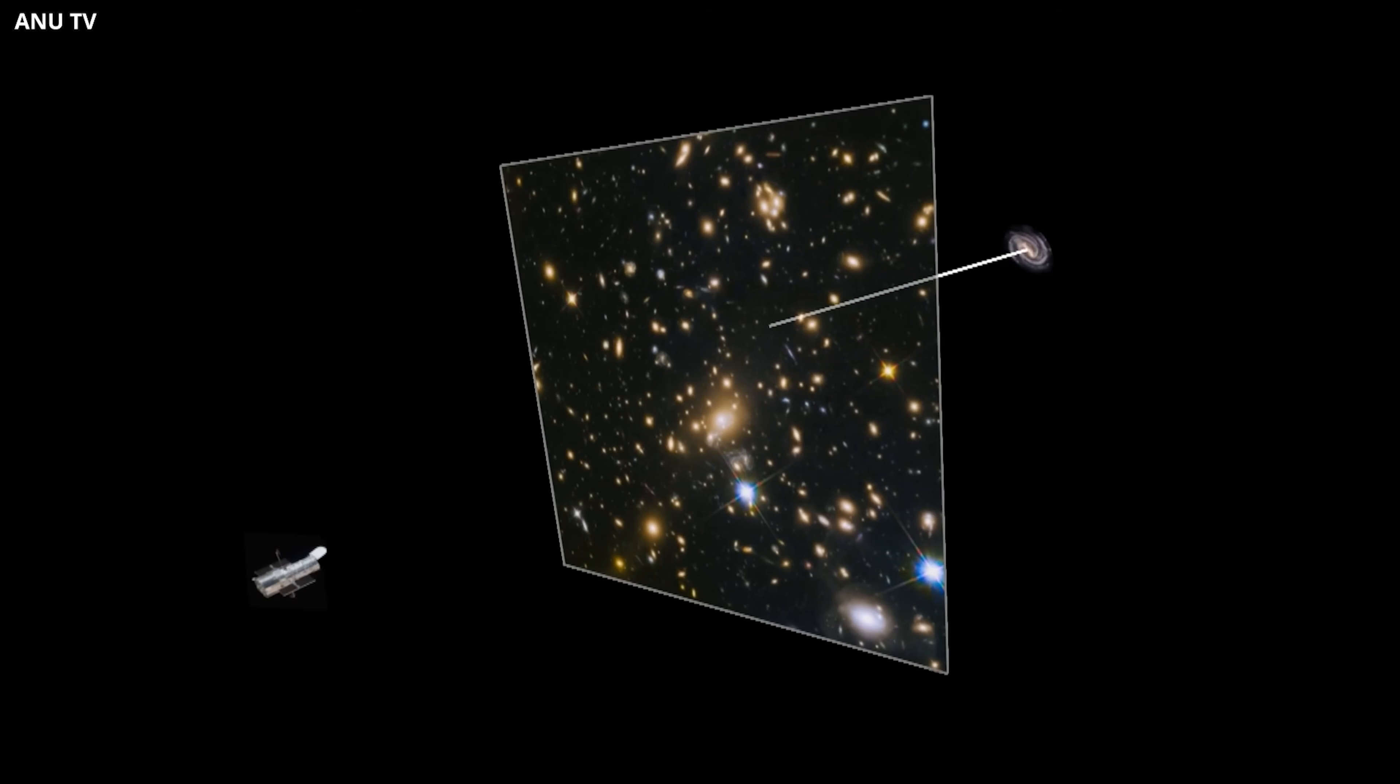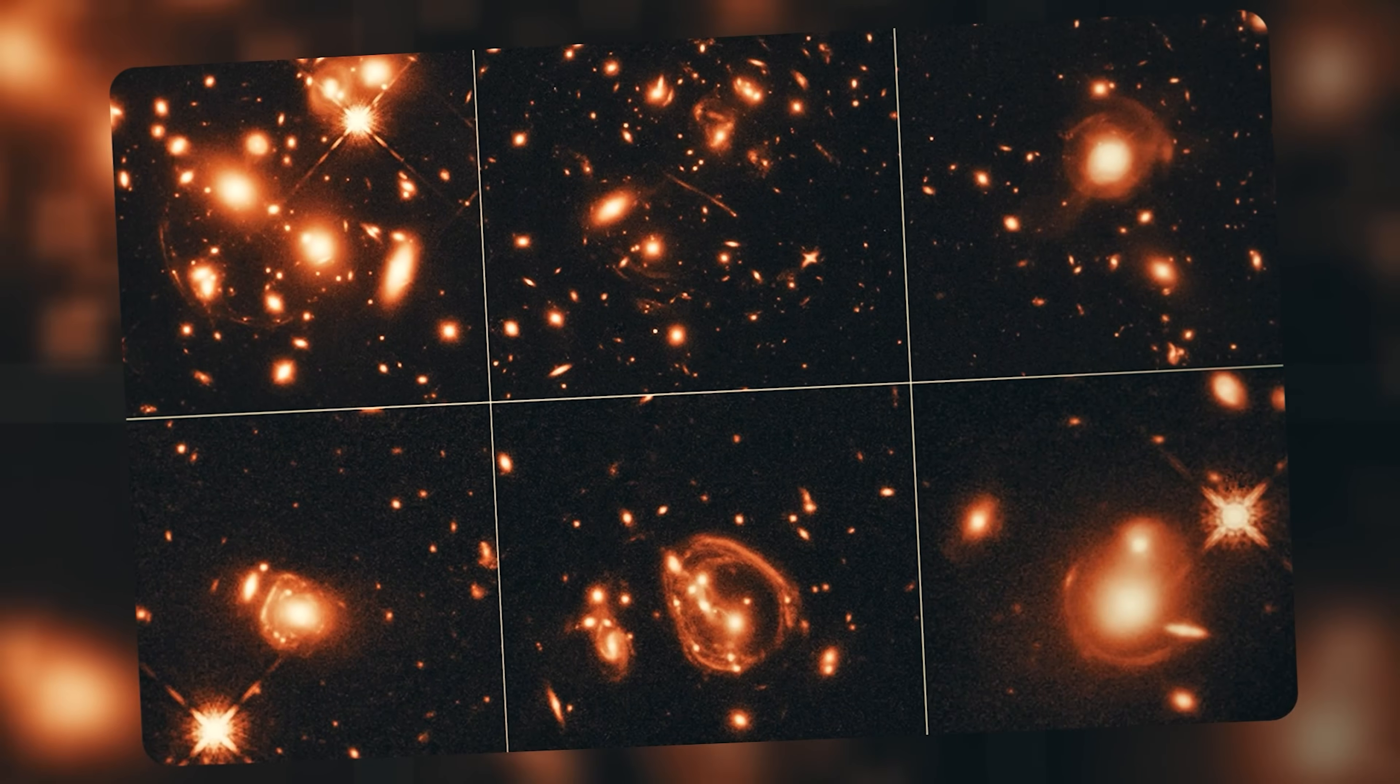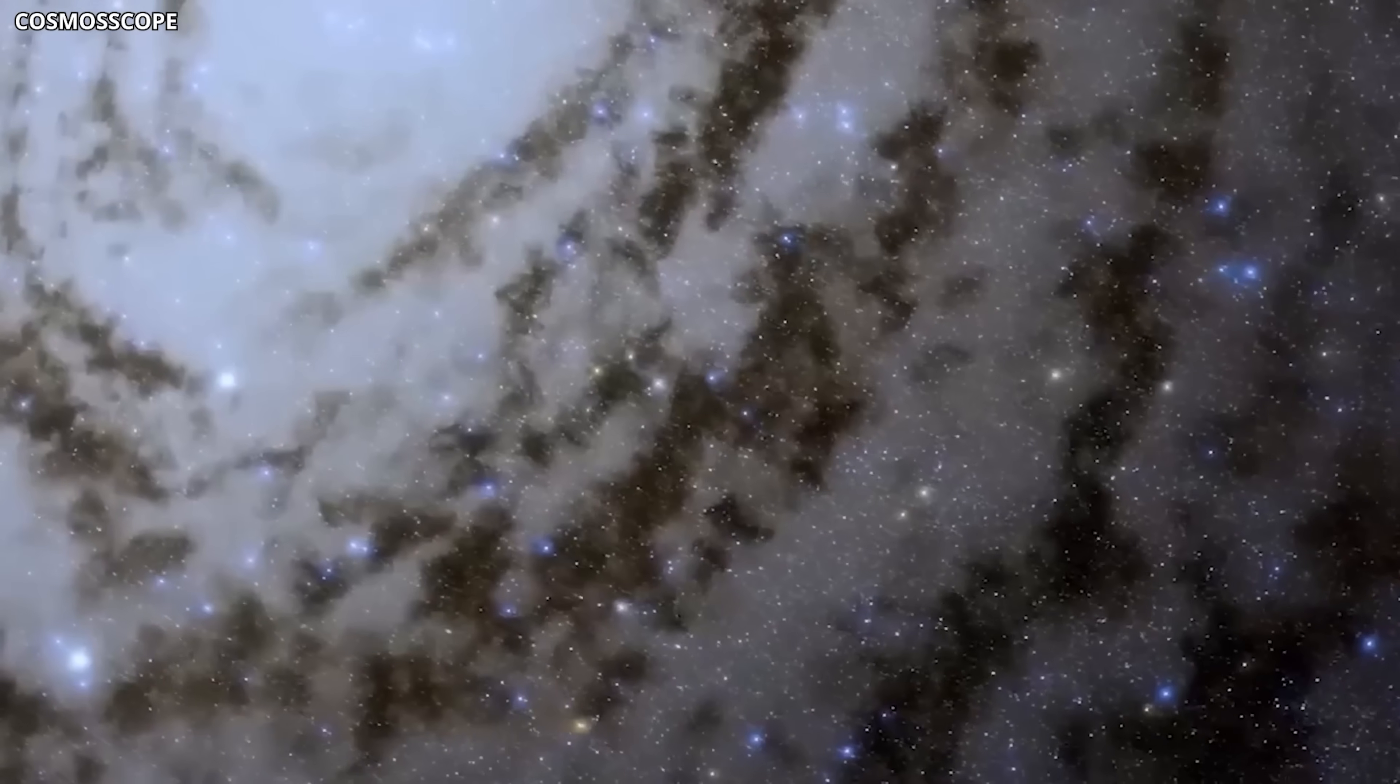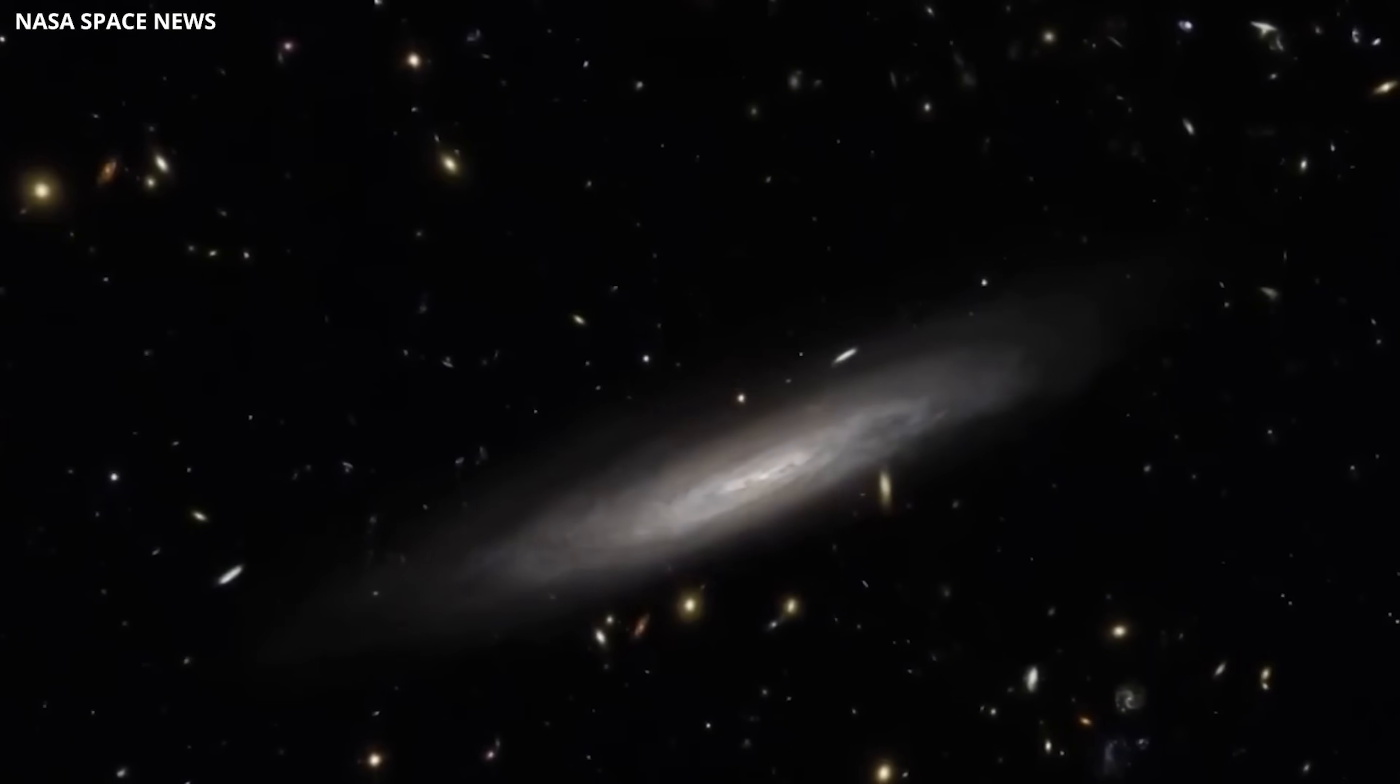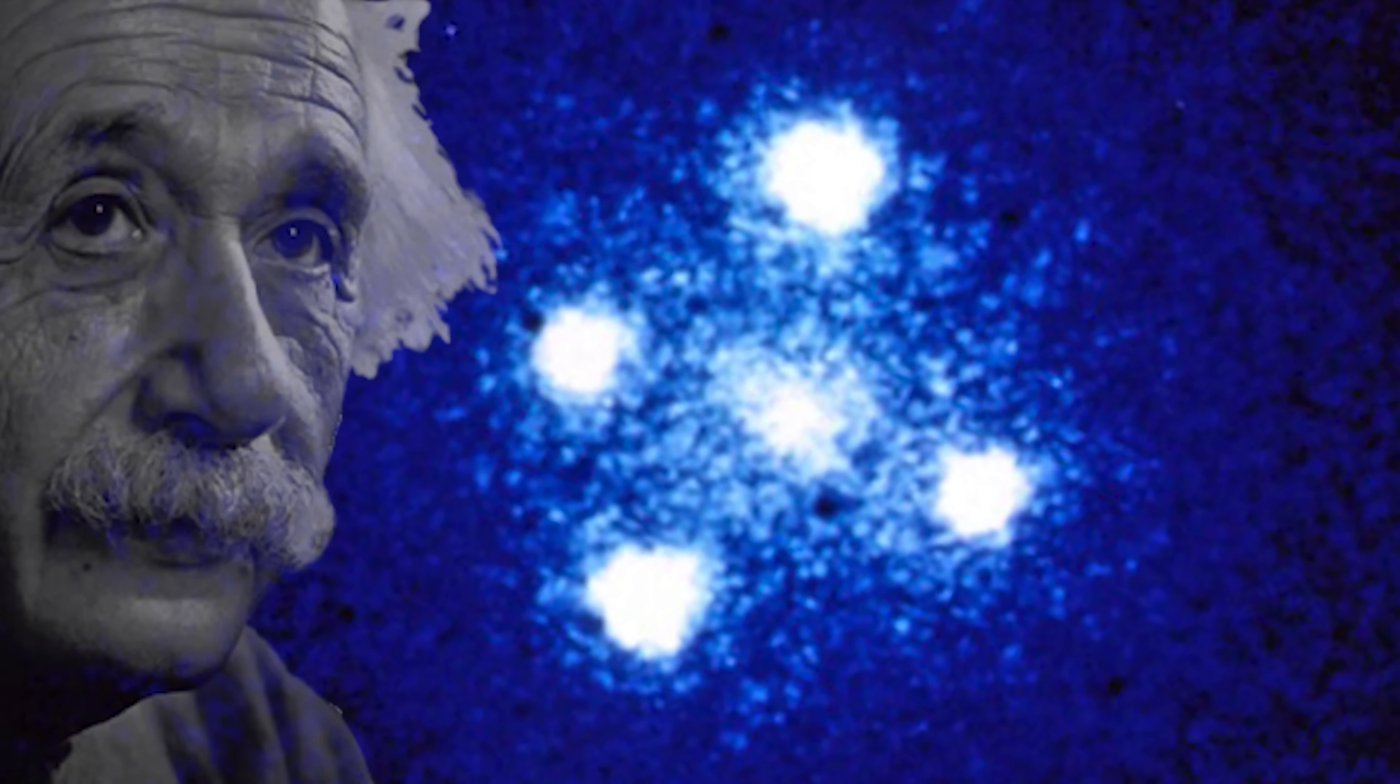This case demonstrates that gravitational lensing is much more than a cosmic magnifying glass. It also acts as a probe of invisible matter in the foreground, revealing that dark matter halos are not just theoretical, they're measurable components of the universe's structure.